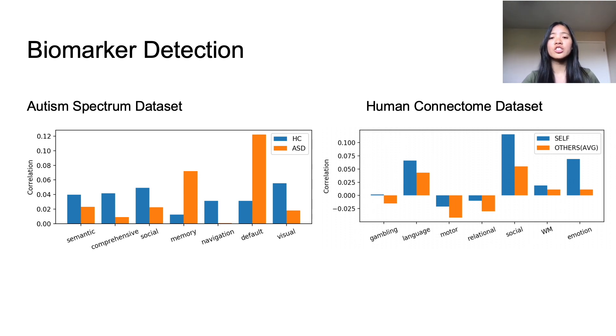Now, on the right, which is the human connectome dataset, the blue bars represent the correlation between the regions of interest and the given task that is labeled under the bar, whereas the orange bar indicates a correlation between the ROIs and the average of the other six tasks. We see that the blue bars always have a more positive correlation value than the orange bars, which is the desired result. It indicates that the selected ROI is more active when individuals are performing the specified task, which makes it a biomarker.